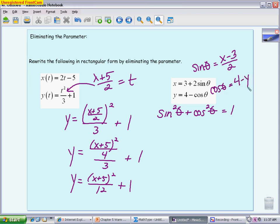Now, I am doing a substitution here, but I'm subbing both of them into my Pythagorean identity. So in place of sine, I'm going to put x minus 3 over 2 and then square it. In place of cosine, I'm going to put 4 minus y and square it equals 1.